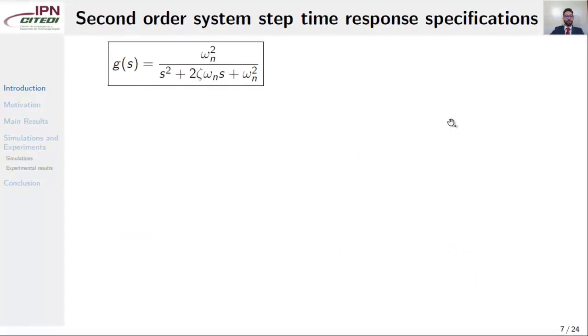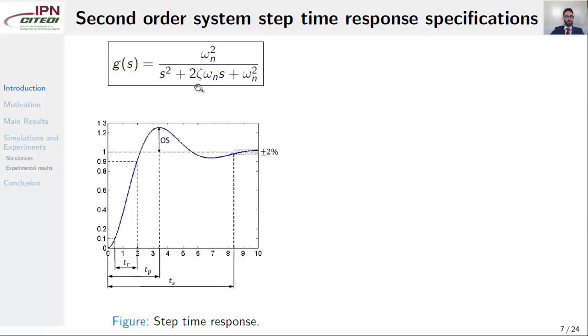We continue with the second-order system step-time response specifications. Consider one more time the transfer function G, defined by the natural frequency omega_n and the damping ratio zeta. Here we show the step-time response of a second-order linear system.